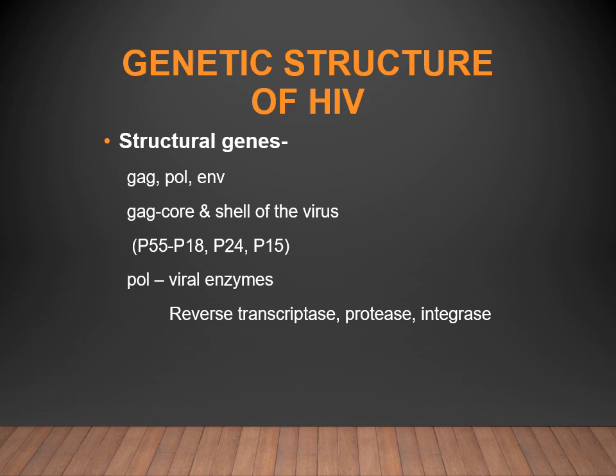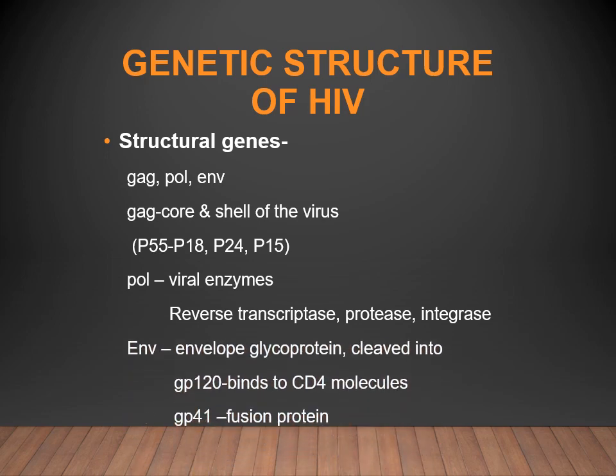The pol gene contributes to the formation of viral enzymes — reverse transcriptase and integrase. Then comes the env gene, which codes for the envelope glycoprotein, cleaved into glycoprotein 120 and glycoprotein 41, responsible for binding and fusion respectively. These are the three main structural genes: gag (core and shell), pol (enzymes), and env (envelope glycoprotein).